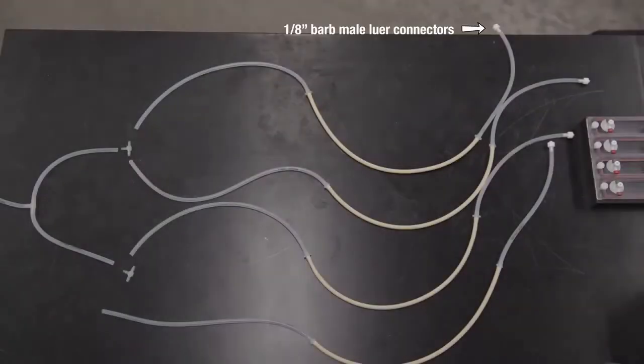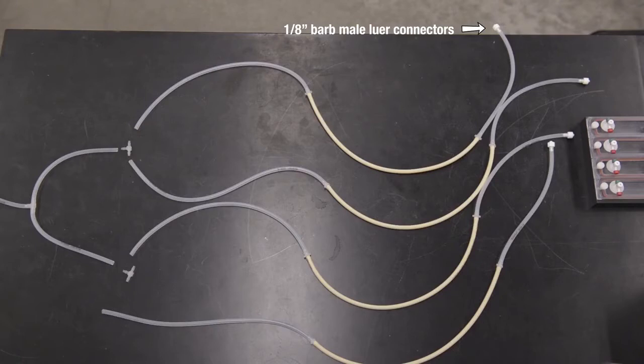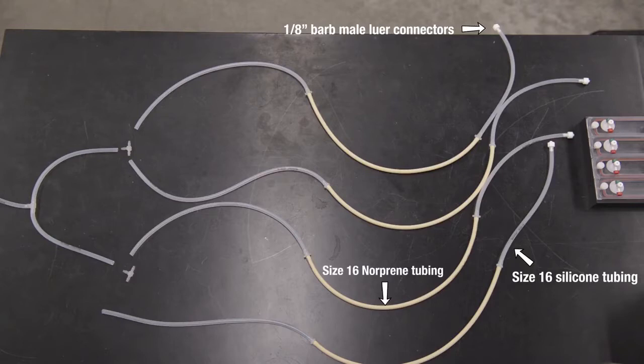Attach 1 1⁄8 inch hose barbed male lure connectors to four equal lengths of size 16 silicone tubing. The size 16 norprene tubing will go through the pump head. Attach the norprene tubing to another length of size 16 silicone tubing.